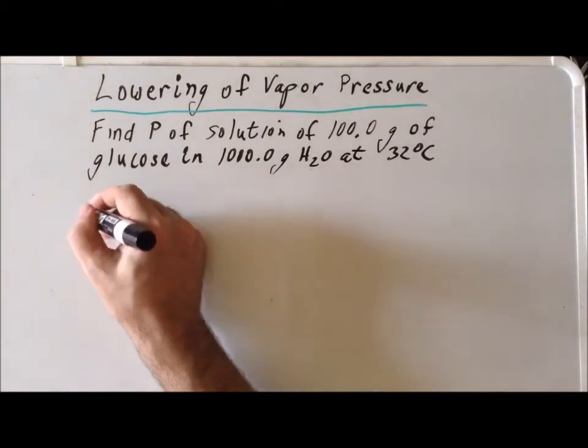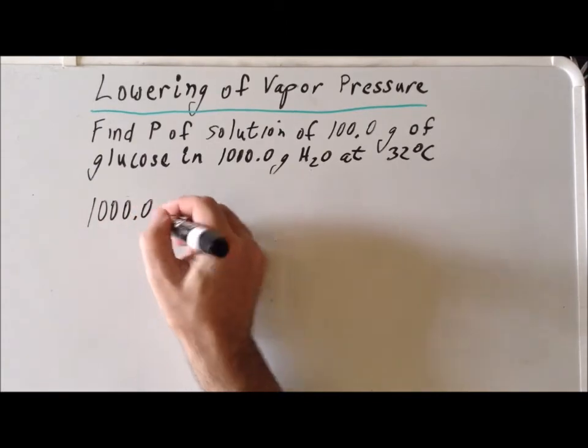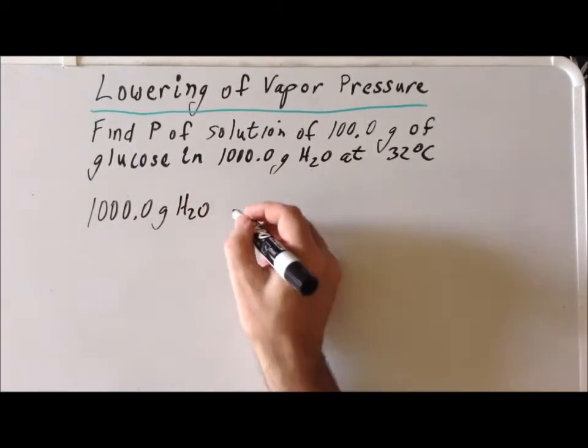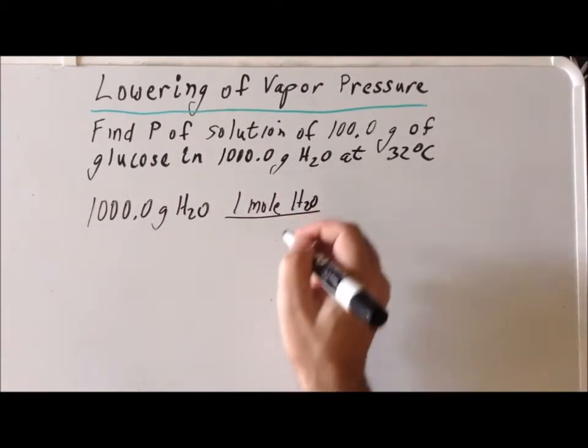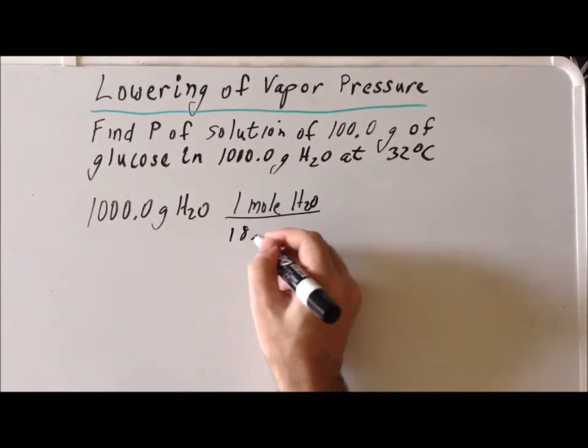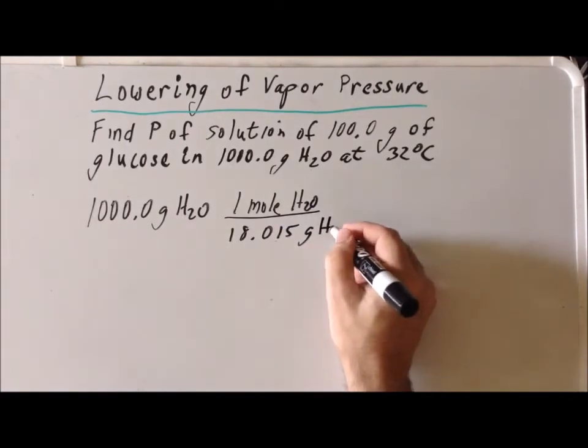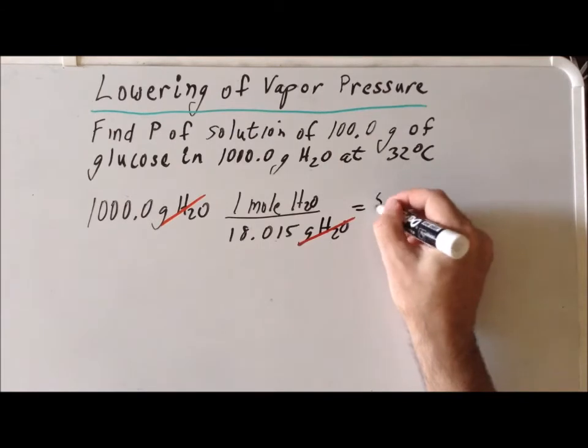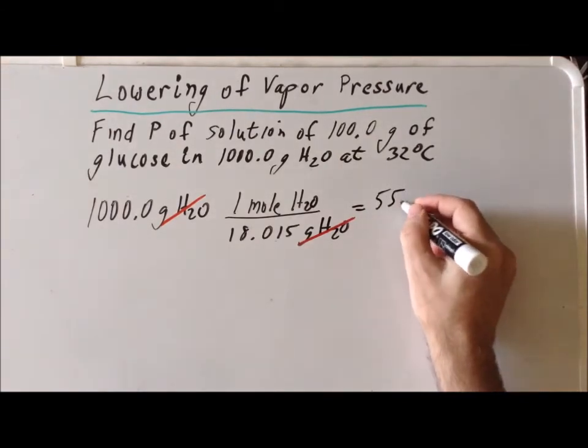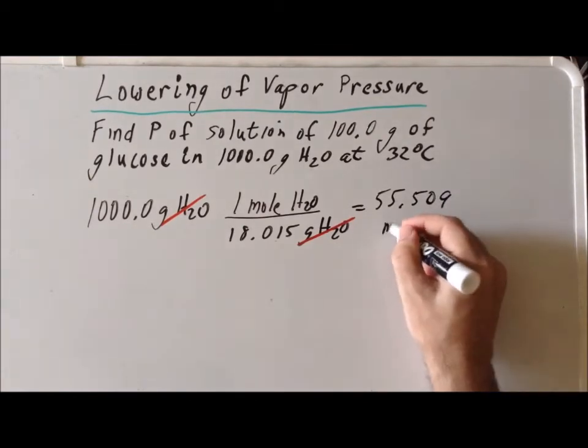First we can start with our 1,000 grams of water and convert this to moles. The molar mass of water is 18.015 grams per mole. If we do the calculation this way, the units of grams of water will cancel, and we'll be left with moles of water, which is exactly what we want. We get 55.509 moles of water.